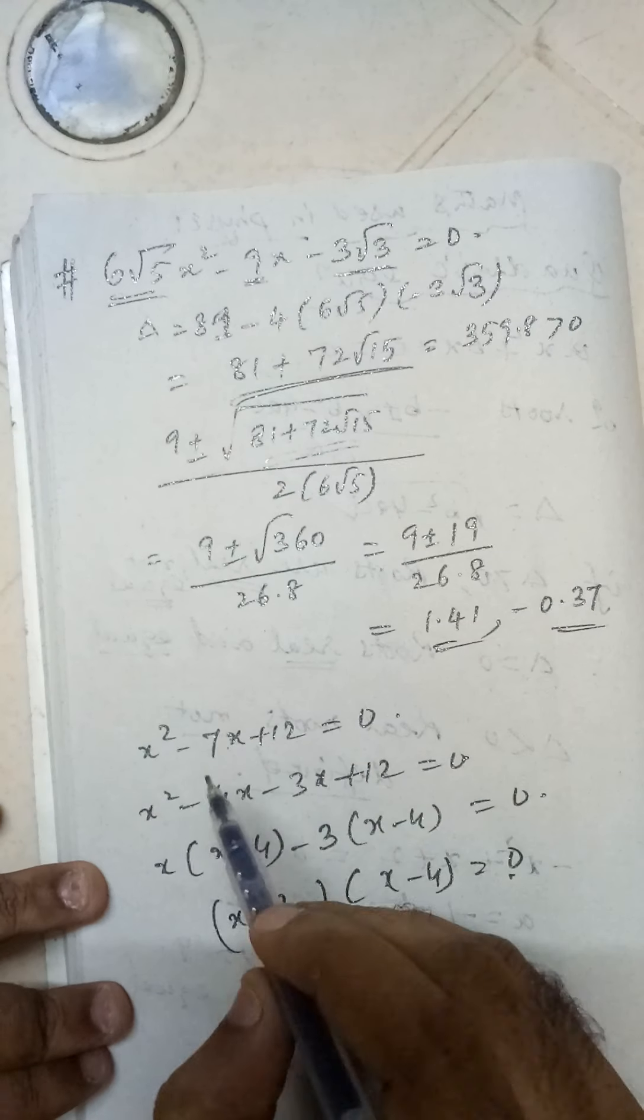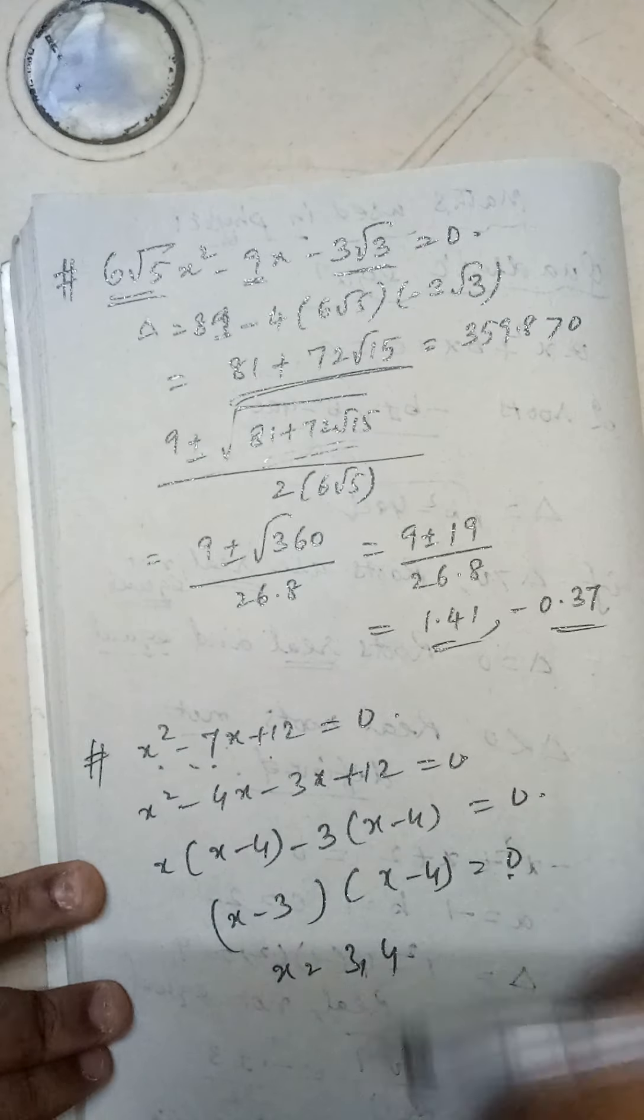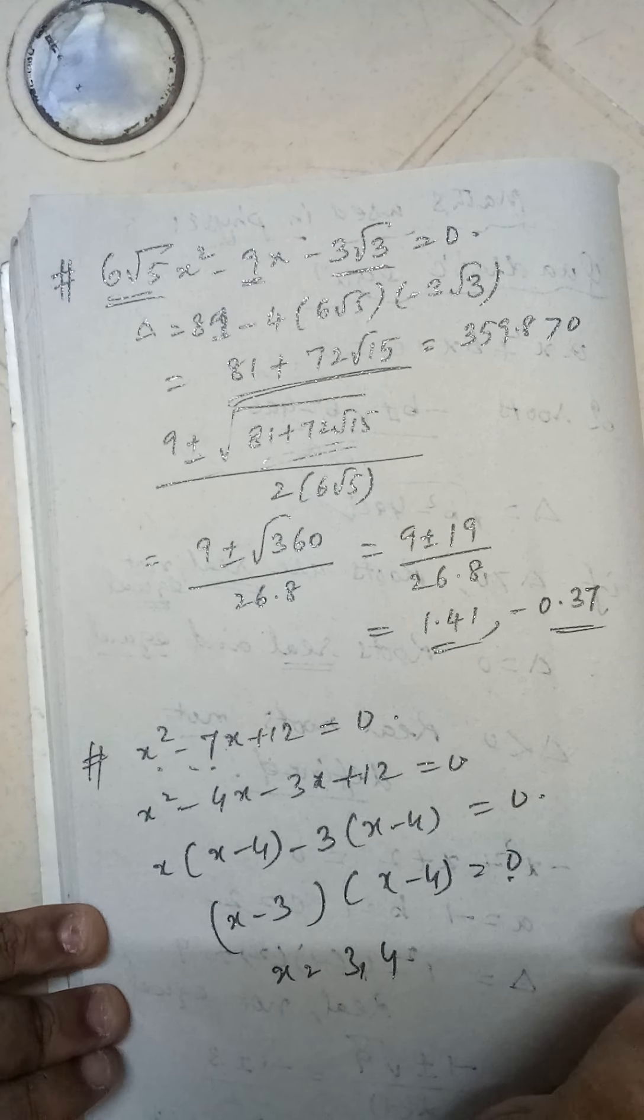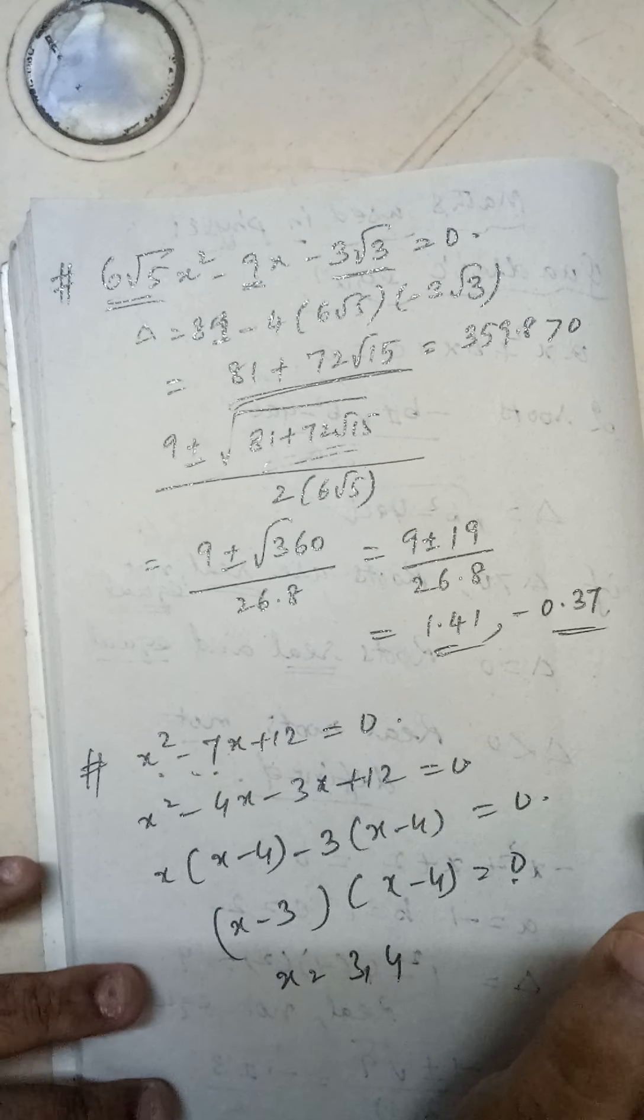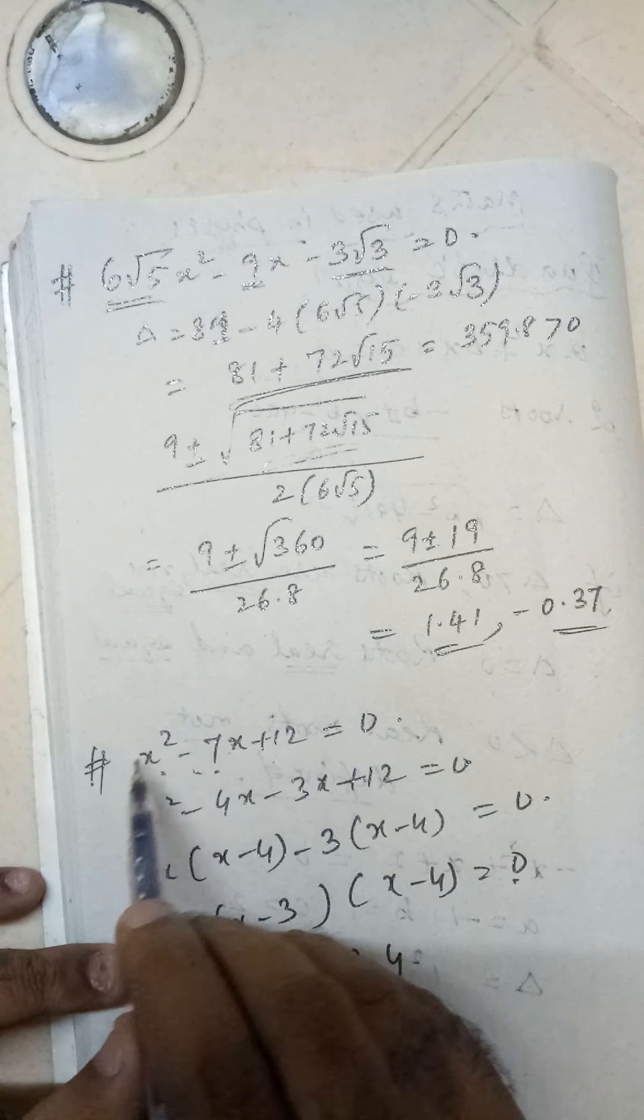Let us see one more example - Example 3: x² - 7x + 12 = 0. Here we can solve the quadratic roots by the method of factorization. The method is: you take the multiple of a and c, so it is 12 here.